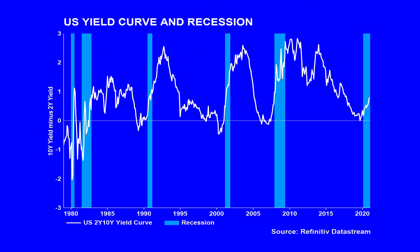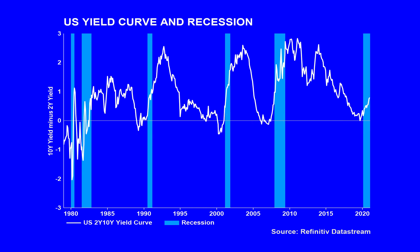All the major recessions of the last 30 years have seen the Federal Reserve raising interest rates, so that rising yields have also been accompanied by a flattening and inversion of the yield curve, driven primarily by the increase in front-end interest rates. Three of the last four recessions were accompanied by this yield curve dynamic.